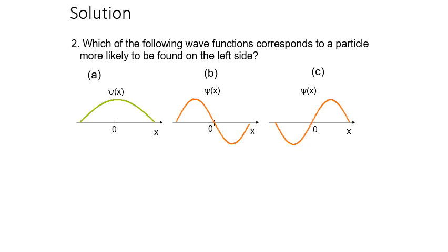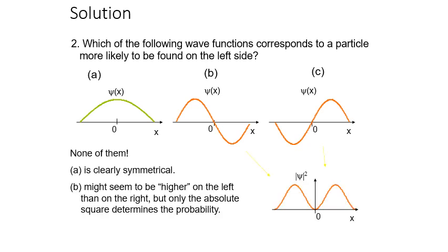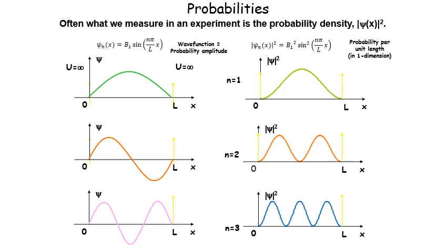The second question asks which wave function corresponds to a particle more likely to be found on the left side. For that, psi* psi must be higher on the left. Looking at the options: the first wave function is clearly symmetric, the second is also quite symmetric, and the third is also symmetric. Since squaring any negative quantity gives a positive result, none of these wave functions gives higher probability on the left side.